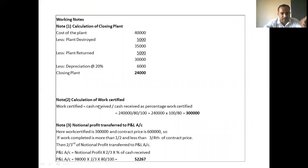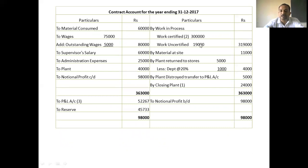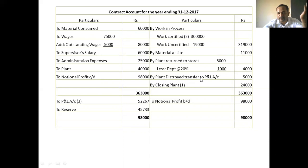Work certified is Rs. 3 lakh on the credit side. Plant calculation: plant total Rs. 40,000 less returned to stores Rs. 5,000, balance Rs. 35,000. Depreciation 20% on Rs. 30,000 is Rs. 6,000. Closing plant at site is Rs. 24,000.